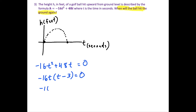Setting each factor equal to zero: negative 16t equals 0 gives t equals 0, which is when the golfer initially hits the ball. Setting t minus 3 equals 0 gives t equals 3. So the ball hits the ground again 3 seconds after the golfer hits it.